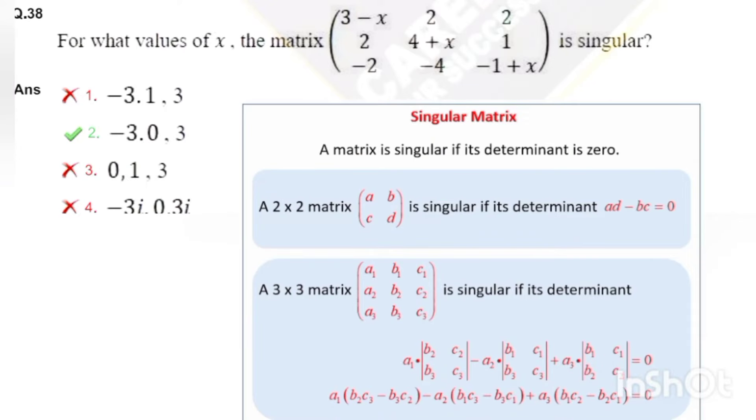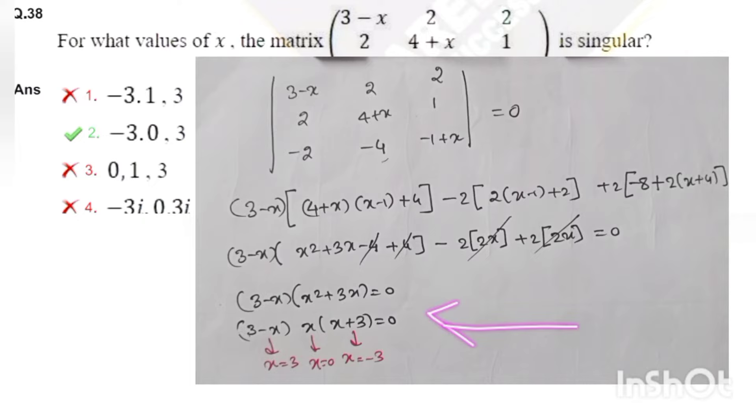Next one, it is a question on matrix but it is actually a determinant. It says matrix is singular. So what is the fact of a matrix being singular? When the determinant is 0. So you have to take determinant of this matrix and solve it, it is a 3 by 3 determinant and after solving you have to equate it to 0. Then you get the value of x.